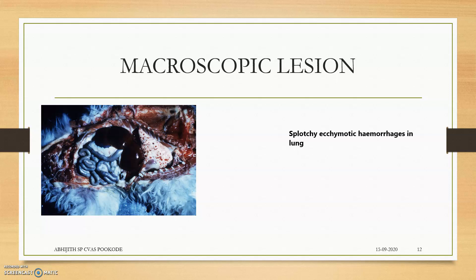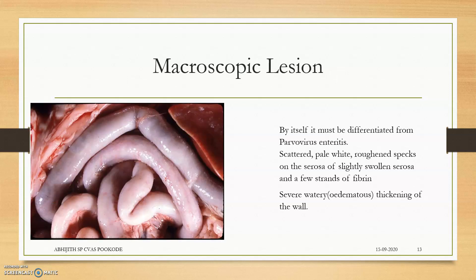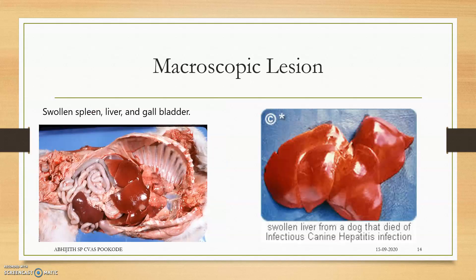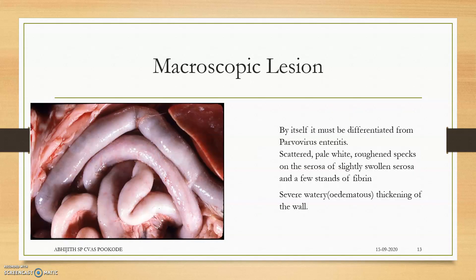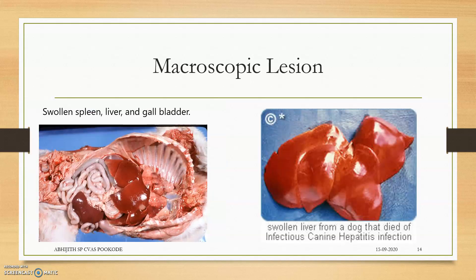Macroscopic lesions: splotchy ecchymotic hemorrhages in the lungs, which cause coughing. These lesions must be differentiated from parvoviral enteritis. Scattered pale white spots and specks on the serosa are mainly present, with severe watery thickening of the intestinal wall — edema is the main intestinal problem. The spleen, liver, and gallbladder are swollen. Here you can see a swollen liver from a dog that died from ICH — it is completely edematous.